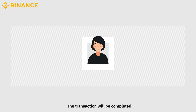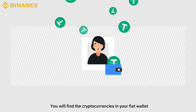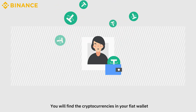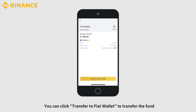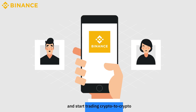The transaction will be completed. You will find the cryptocurrencies in your fiat wallet. You can click Transfer to Fiat Wallet to transfer the fund and start trading crypto to crypto.